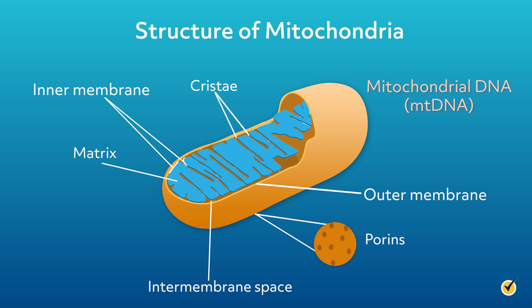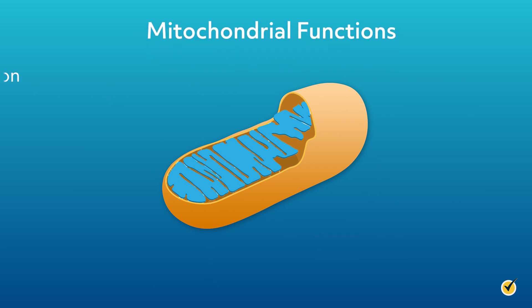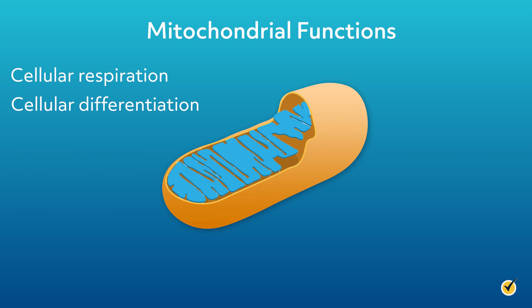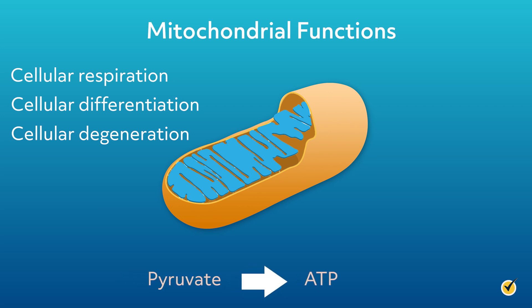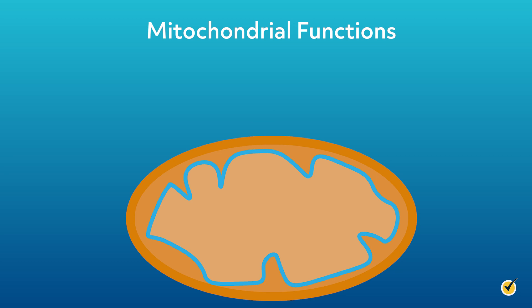It's important to understand the structure of the mitochondrion because all of its processes are site specific. Mitochondria undergo several different processes, such as cellular respiration, cellular differentiation, and cellular degeneration. Primarily we think about mitochondria metabolically, as they convert pyruvate into ATP to carry out cellular respiration. Glycolysis takes the glucose from the food we eat and converts it into pyruvate in the cytoplasm, giving us two molecules of pyruvate — but we haven't generated any energy yet. This is where the mitochondrion comes in.